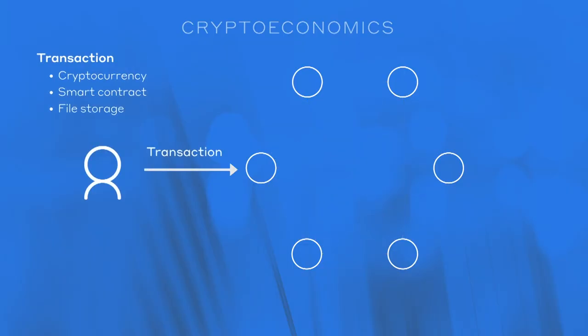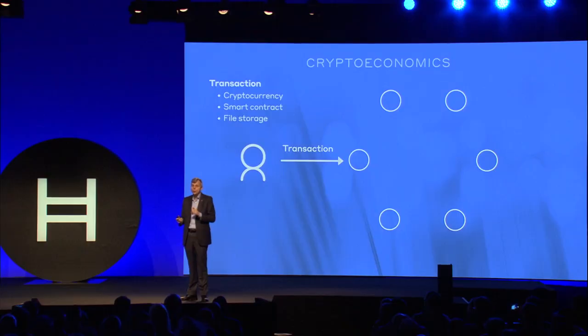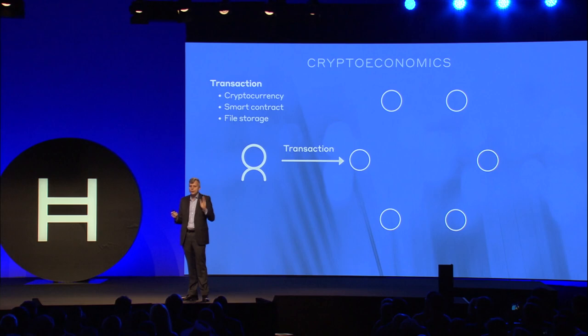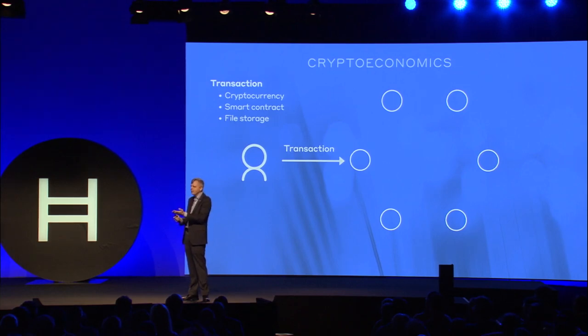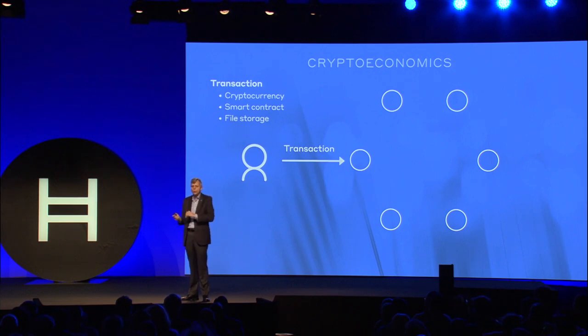When you want to do a transaction — move some HBARs from one account to another, pay someone, run a smart contract, or store a file — one of our three services, or one of the services in the future — if you want to do a transaction, you make your transaction, you digitally sign it so no one can do this in your name, and you send it to one of the nodes. Any of the nodes. Just pick a node on the network and send it to that one node.